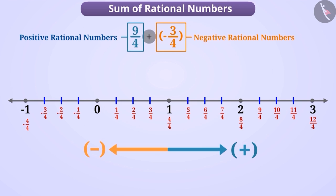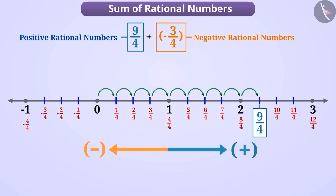Now let us sum the given numbers. The first number is 9 by 4, so we will find the place of 9 by 4. It is a positive rational number, so its position is 9 steps to the right of 0. Now we will look at the second number — if it is positive, we move to the right, but if it is negative, we move to the left. Like here, minus 3 by 4 is a negative rational number, so we will move 3 steps to the left of 9 by 4 on the number line.